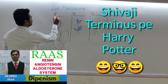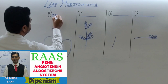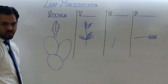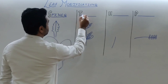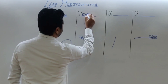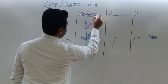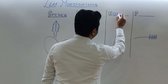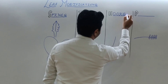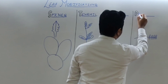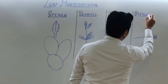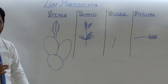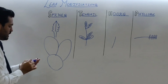The first modification is leaf spines. The second modification is when leaf converts into a tendril — leaf tendril. Third modification is when leaf is converted into hooks. And the final modification is where leaf is converted into a phyllode. So STHP: spines, tendril, hook, phyllode — these are the 4 modifications.